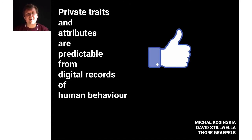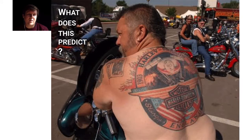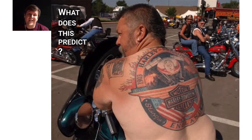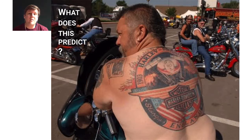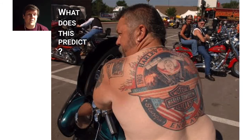Let's consider how much can actually be predicted from data, turning it into a quiz. Consider this attribute: liking Harley Davidson on Facebook. What might this predict about a person? The solution is low intelligence. The researchers found a correlation between people who liked Harley Davidson and people who had low intelligence.